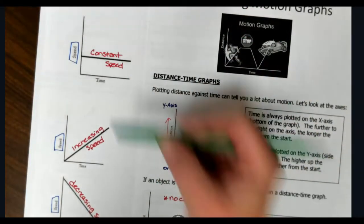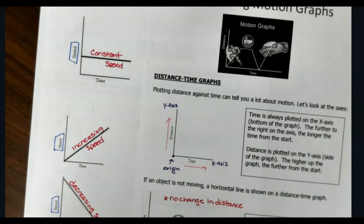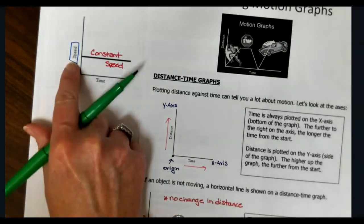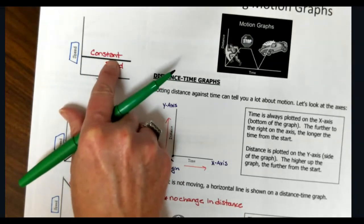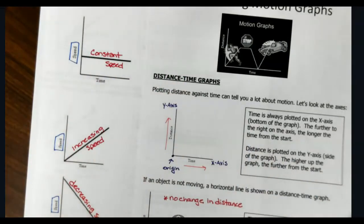So right now I have two graphs that look identical. The difference is this one says distance. This one says speed. If I'm looking at distance and I have a horizontal line, that means the distance is not changing. So the object is not moving. But on a speed graph, if I'm looking at a horizontal line, that means the speed is not changing. So the object is traveling at a constant rate of speed.